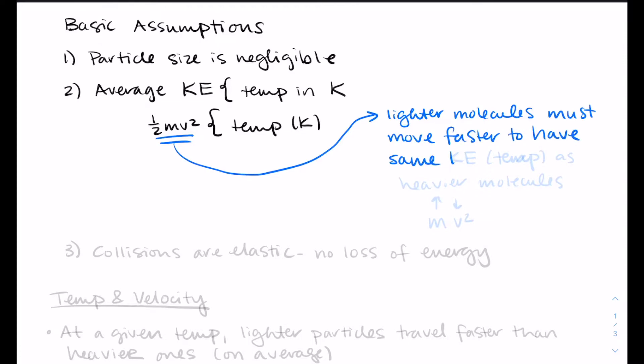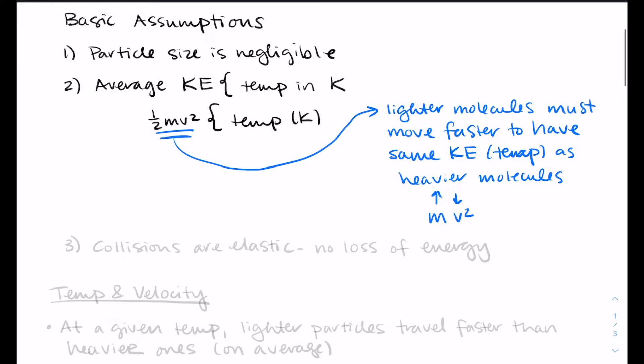Because kinetic energy is one half mv squared, two samples that have the same temperature have to have the same average kinetic energy. So the mass of the molecules in those samples will affect how fast the particles are traveling in order to have that kinetic energy. Lighter molecules must move faster to have the same kinetic energy as heavier molecules.